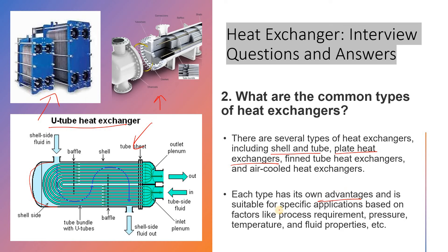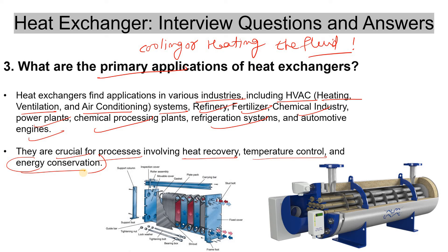Sometimes heat exchangers are used so that waste heat increases the temperature of a process fluid, which is then sent to another system — performing both energy conservation and process optimization. Another example is producing low-pressure steam from waste heat, which is also an example of energy conservation and efficiency.